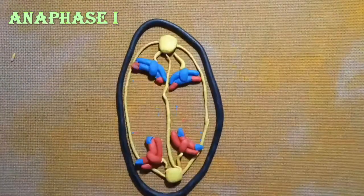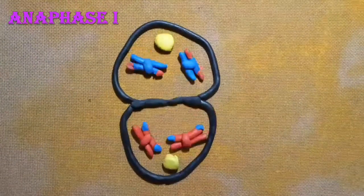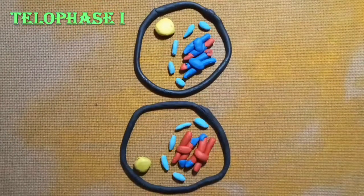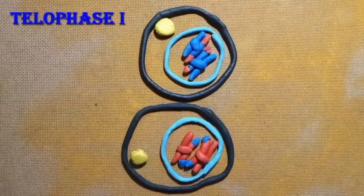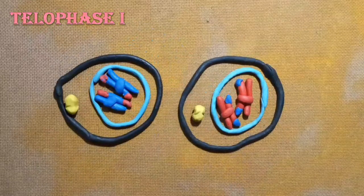Anaphase I: pairs of chromosomes are pulled apart to the opposite side. Telophase I: spindle fibers break down. Cytokinesis happens, which is when the cell is divided into two daughter cells. Nuclear membrane and nuclear envelope reform.